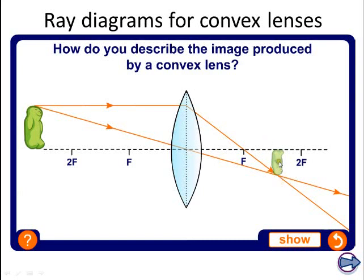So three properties of this image are it's inverted, it's diminished, and it's real.